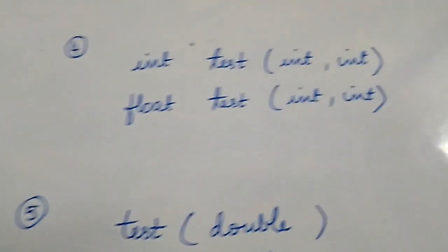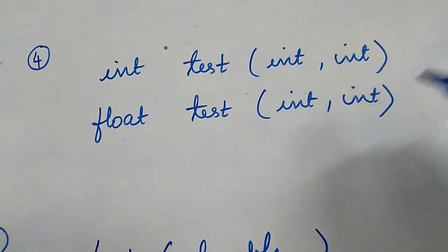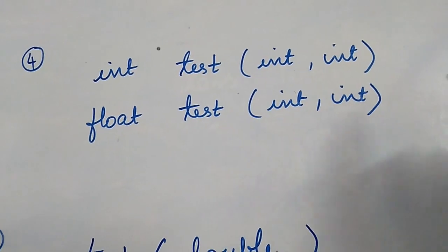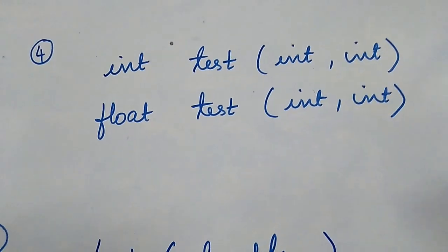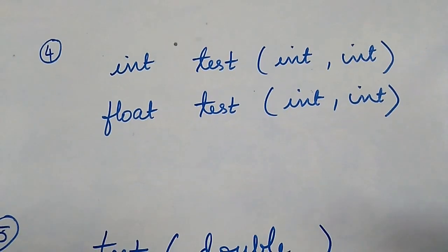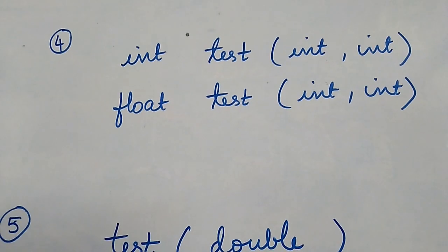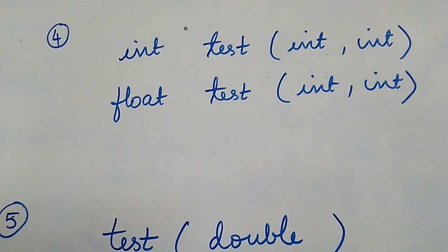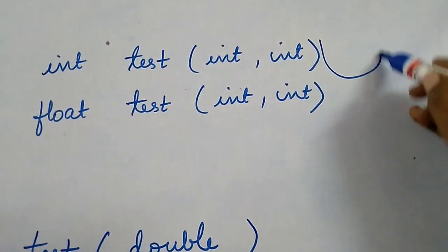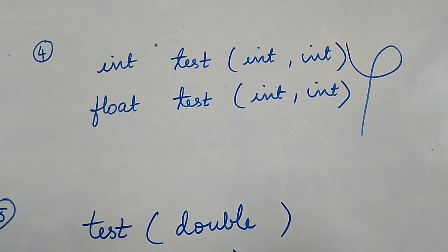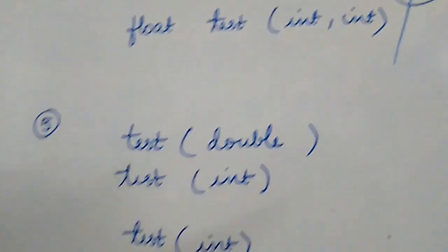An invalid case: two methods both having two integer parameters that differ only in return type. As established, return type is insufficient to distinguish method versions, so this is an invalid overloading case and will cause a compilation error.